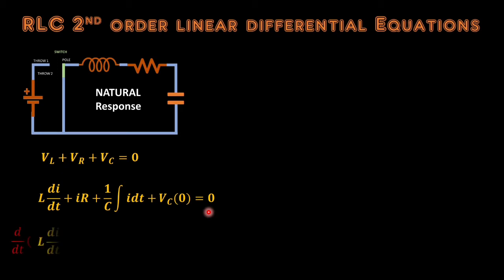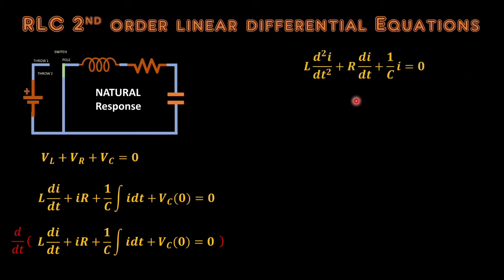The whole equation is equated to zero. To get rid of the integral operator we will differentiate both sides of the equation. This reduces our equation to L·(d²i/dt²) plus R·(di/dt) plus (1/C)·i, since the derivative of the integral cancels. The derivative of the constant V_C at time equal to zero is also zero, and the right side remains zero.